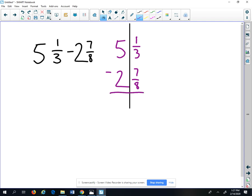Next, we can't subtract numbers with different denominators, so we need to find a common denominator. We do this by finding the least common multiple of the two denominators.